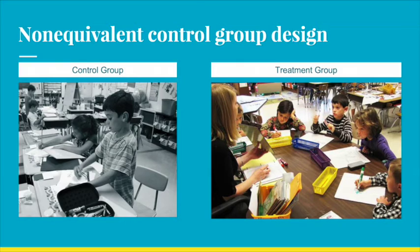Let's go back to our original research question: Can small group settings increase student ability to give and receive constructive criticism? In non-equivalent control group design, two groups are compared. One group does not have the treatment of a small group setting — this is the control group. The treatment group does have the change implemented. Both groups are tested with the same analysis tool. You may select two groups from the same school or two groups from different schools, but then you must consider other variables when analyzing your results. This is a popular design among educators for its practicality and ease of comparing control and treatment groups.